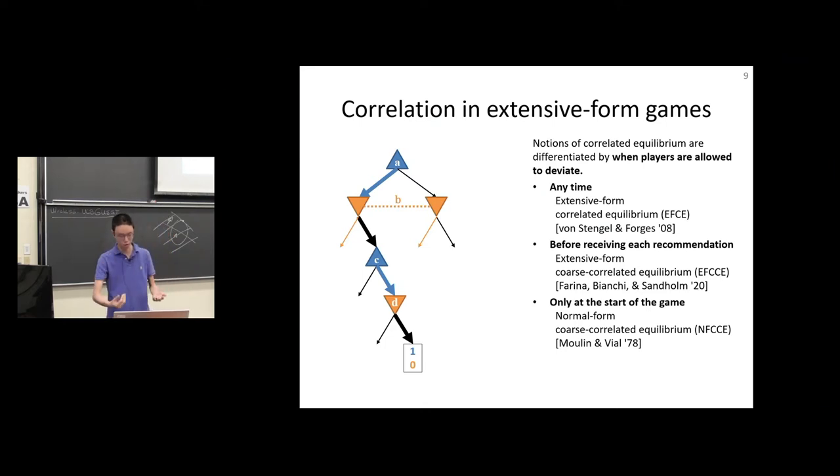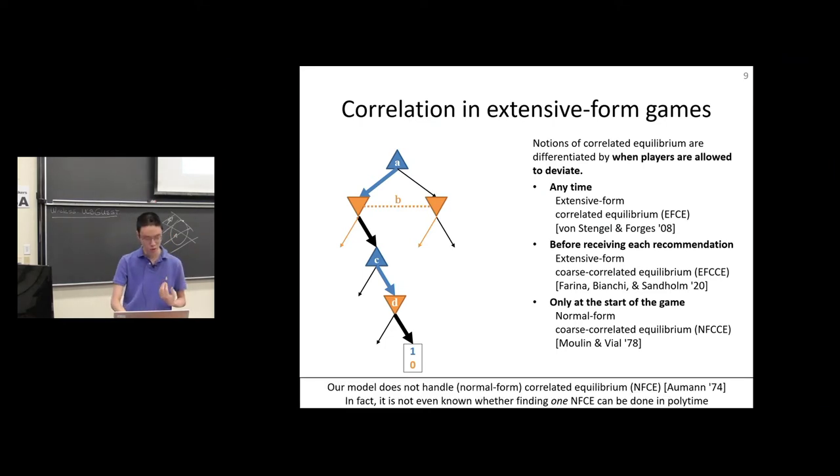The third and coarsest notion of equilibrium is a normal form coarse correlated equilibrium, which is by far the oldest. In normal form coarse correlated equilibrium, you're only allowed to deviate at the beginning of the game. At the very beginning, you have to make this binary choice: am I going to have complete freedom to do whatever I want but receive no recommendations, or am I going to bind myself to obeying every single recommendation the mediator gives me?